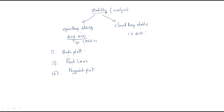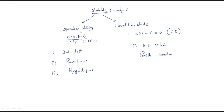For closed loop stability, we use the characteristic equation: 1 + G(S)·H(S) = 0. That's why it is called closed loop stability — we are using the closed loop transfer function. To test closed loop stability, we have only one method: the RH criteria, which stands for Routh-Hurwitz criteria.